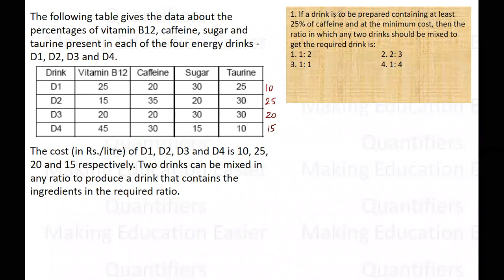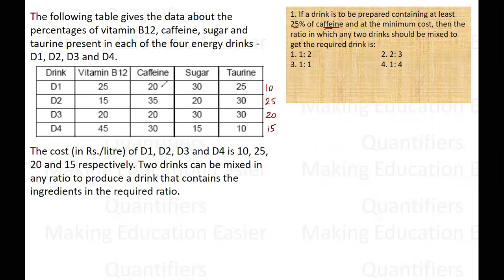The first question says: if a drink is to be prepared containing at least 25% caffeine at the minimum cost, then in what ratio should any two drinks be mixed to get the required drink? We need 25% caffeine, so if I mix two drinks A and B, the required concentration of caffeine should be 25%.